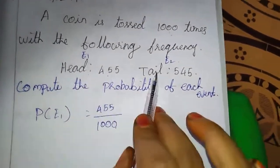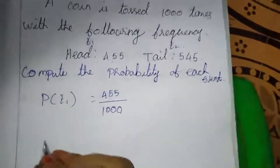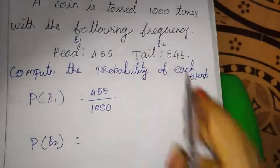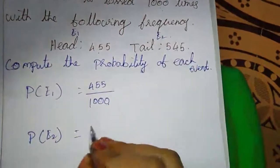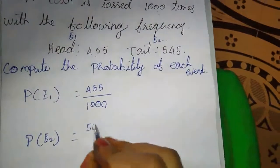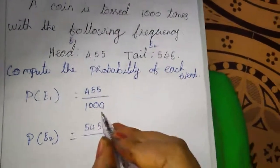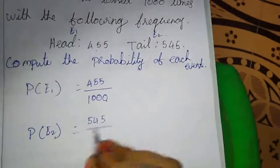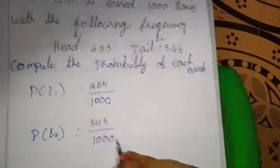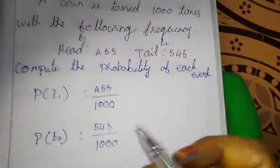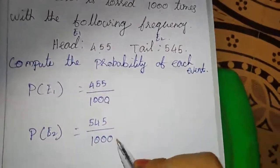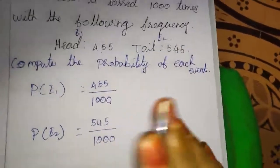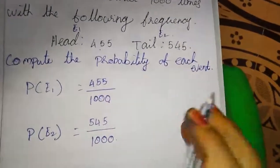Next we will move to the tail, that is P of E2. P of E2 equals 545 divided by 1000, since the total tossing time is 1000. This is the answer for this question. We can simplify this also — that is our wish. If we want we can simplify, or else we will keep it like this itself.